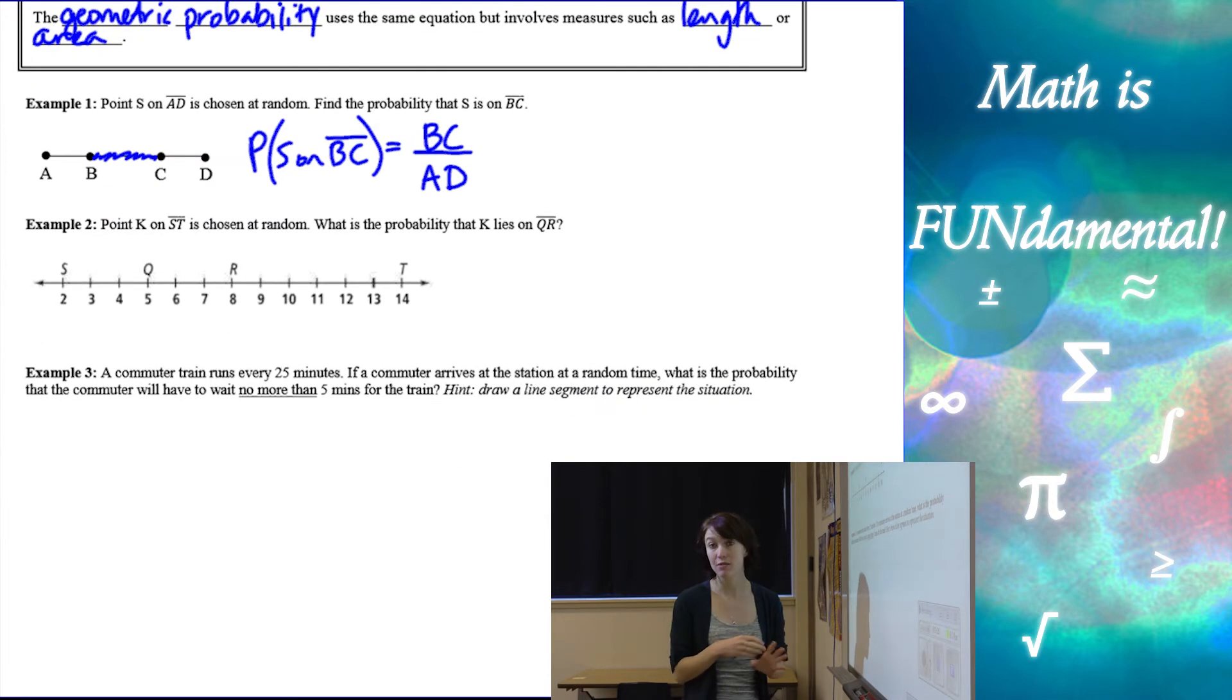Alright now let's look at what happens when we do have some numbers on our line. So we have point K on ST is chosen at random. So from 2 all the way to 14. What is the probability that K lies on QR? So I want to know the probability that K is in between QR.